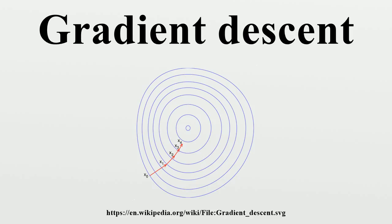Gradient descent is based on the observation that if a multivariable function is defined and differentiable in a neighborhood of a point, then it decreases fastest if one goes from that point in the direction of the negative gradient. It follows that, if the step size is small enough, then the term is subtracted from the current point because we want to move against the gradient, namely down toward the minimum.